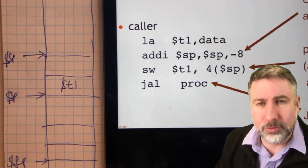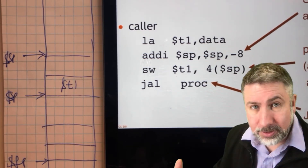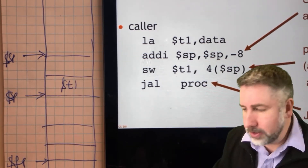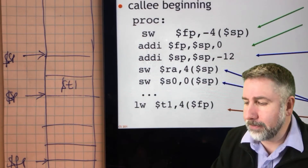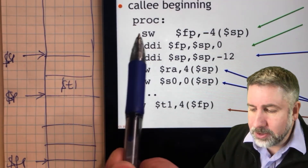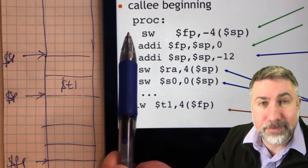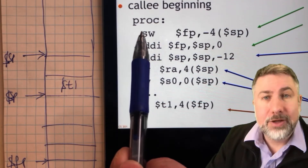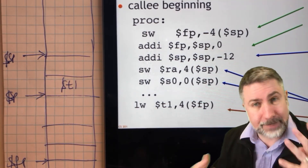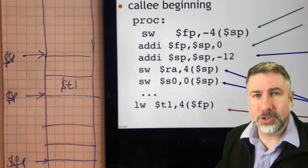All that JAL does is store the return address in the return address register, and then put a new value into the program counter. That new value of the program counter is going to point to the first instruction of the procedure. This code now is going to be used to set up the stack frame for this procedure.